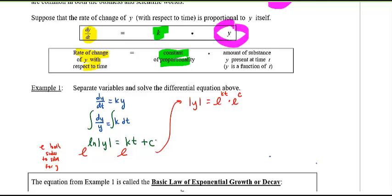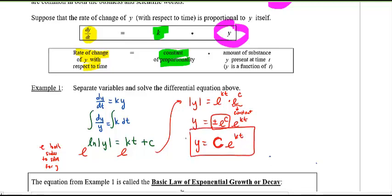Well, e to the C is really just some constant. The absolute value gives a plus minus, so I can go plus or minus e to the constant times e to the kt. This just represents some other constant, so why don't I just call that big C. So here goes C e to the kt. You might have seen this equation before in pre-calculus 12, and now we've just proven it to you using calculus.